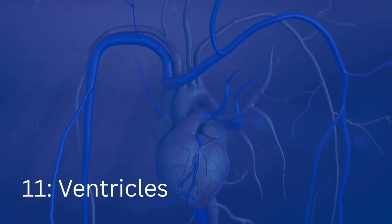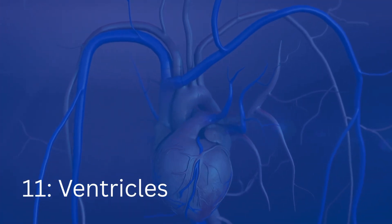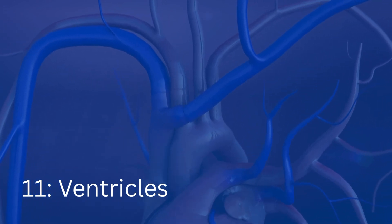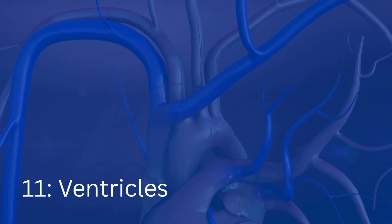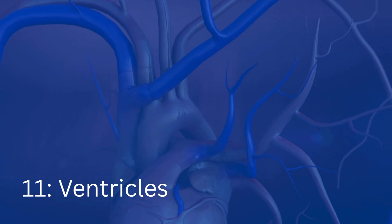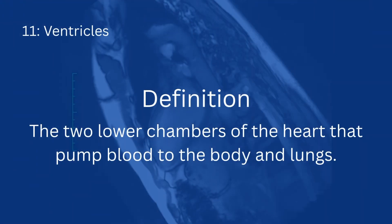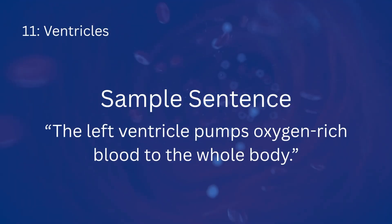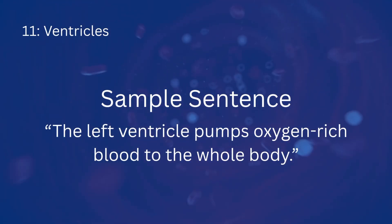Next up is ventricles. These are the two lower chambers of the heart that pump blood to the body and lungs. Example: The left ventricle pumps oxygen-rich blood to the whole body.